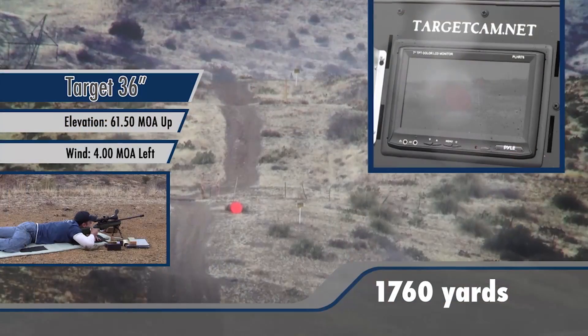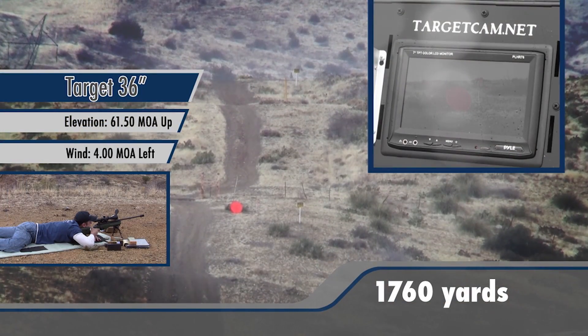Extended long-range shooting starts whenever you get into transonic and start accounting for all of those factors to center your group on the target. Different rifles have different transonic ranges — different ranges that are considered long-range. With a 22 rimfire, for example, you could zero for 50 yards and need a significant sight correction by the time you get to 100 yards, so 150 yards could be a long-range shot for a 22 rimfire.